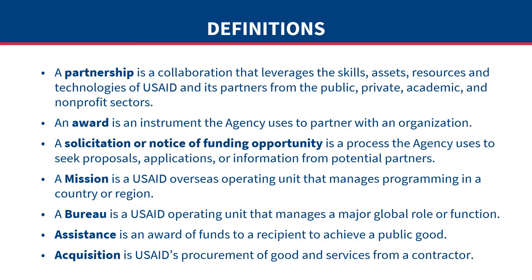Before we begin, let us review some basic terms. A partnership is a collaboration that leverages the skills, assets, technologies, and resources of USAID and its partners from the public, private, academic, and non-profit sectors. An award is an instrument the agency uses to partner with an organization; each award confirms how a partner should use those funds, and every award is the foundation of a partnership with USAID. A solicitation or notice of funding opportunity is a process the agency uses to seek proposals, applications, or information from potential partners. A mission is a USAID overseas operating unit that manages programming in a country or region.